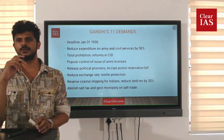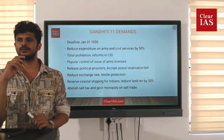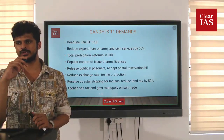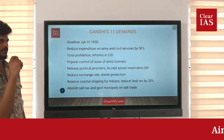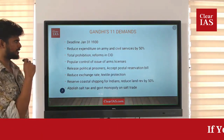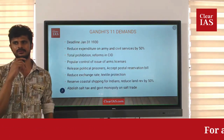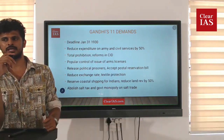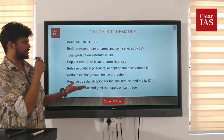Before launching a major movement, Gandhiji provided the British another chance to accept his demands. He raised 11 demands to the British government, which came to be known as Gandhi's 11 demands before the Civil Disobedience Movement. Once Purna Swaraj was declared, Gandhiji gave a deadline of January 31, 1930 — one month's time to agree to his 11 demands — failing which a huge movement would be launched.